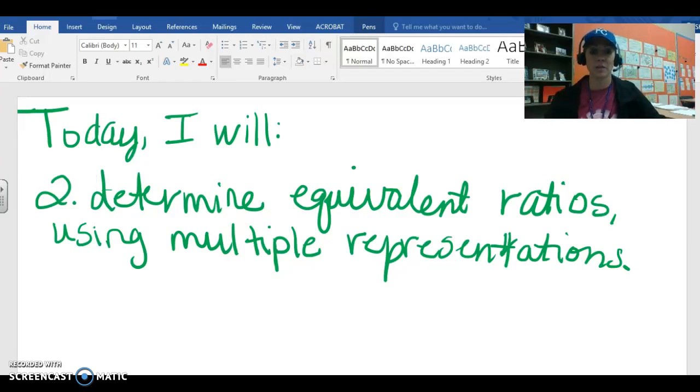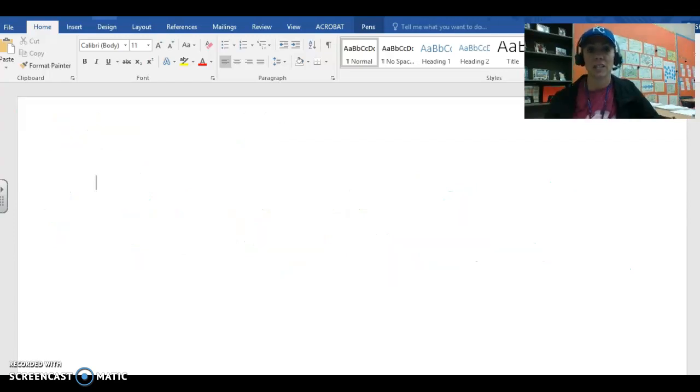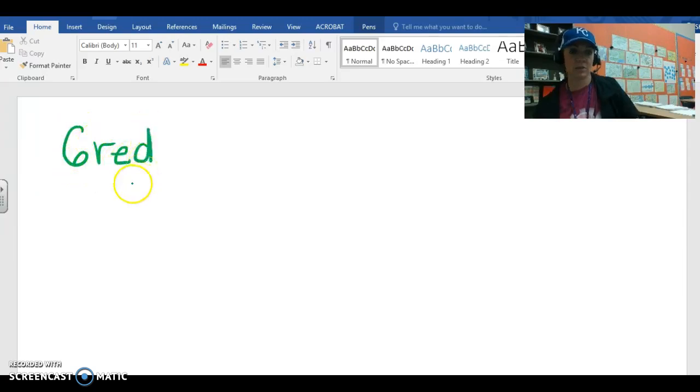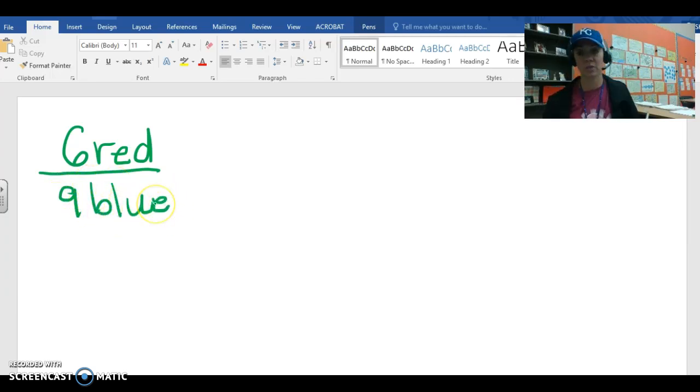Make sure you pause so that you can get this information in your notes. To get started, we're going to review how to scale up and scale down on tables, double number lines, and graphs. So we're going to start with the ratio of six red marbles to nine blue marbles. Six red to nine blue, just like that. Here's our fractional form, which is what you guys have been seeing a lot.